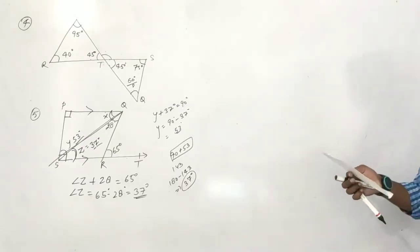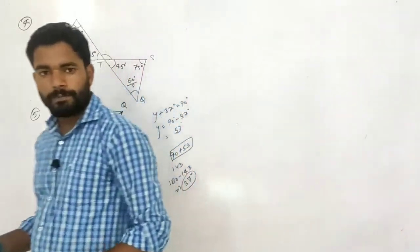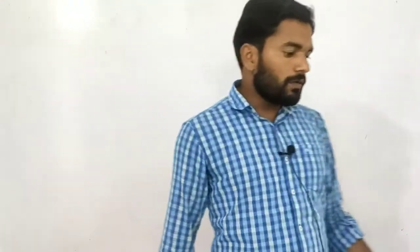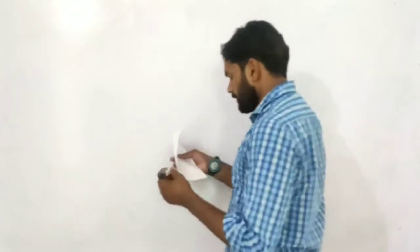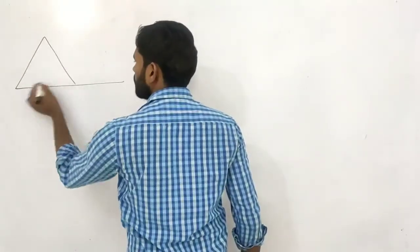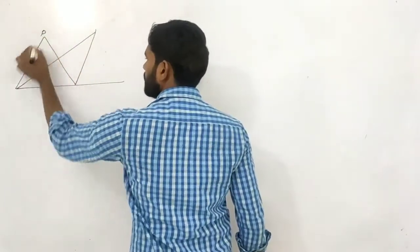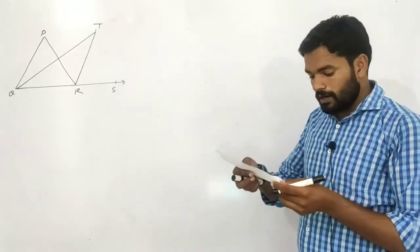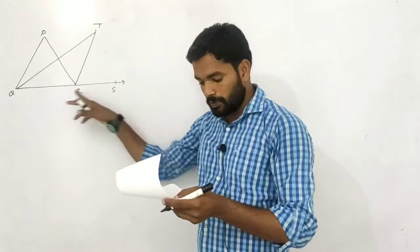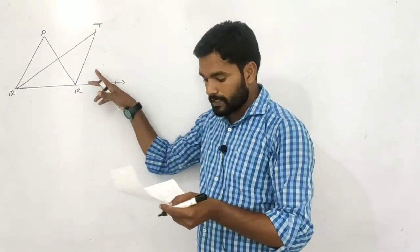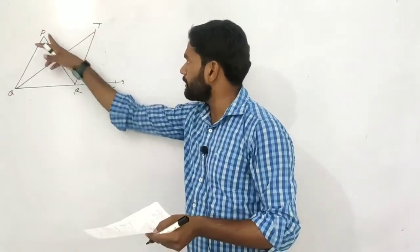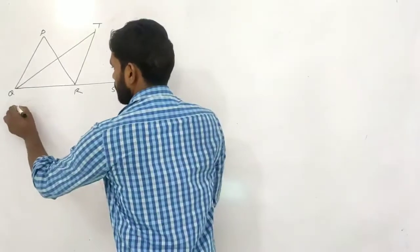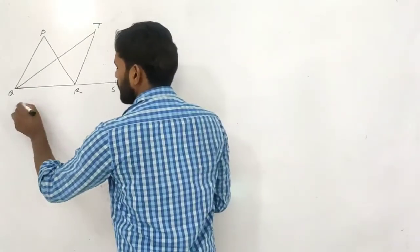Now the last final question. Question number 6 is an important question and a little puzzling also, so let's start. The given structure is: this is a bisector and this is also an angle bisector. PQR, this is point S and this is point T. Side QR of triangle PQR is produced to point S. The bisector of angle PQR is QT and the bisector of PRS is RT. They intersect each other at point T.